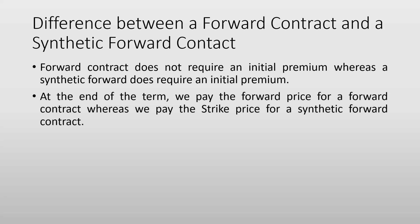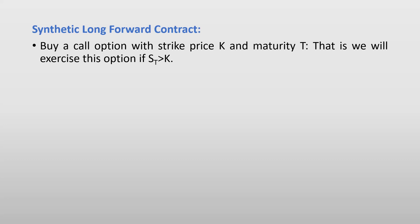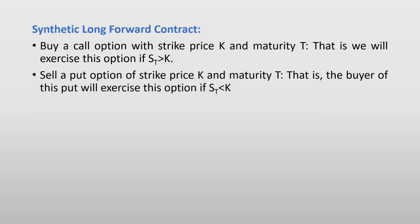For a forward contract we pay the forward price at the end of the term, whereas for a synthetic forward we pay the strike price. To construct a synthetic long forward: first, buy a call option with strike price K and maturity T — we exercise this if the stock price at maturity is greater than K. At the same time, sell a put option with the same strike price and maturity. By selling the put, the buyer of that option will exercise it if the stock price at maturity is less than K, meaning we are obligated to buy the stock at the strike price.